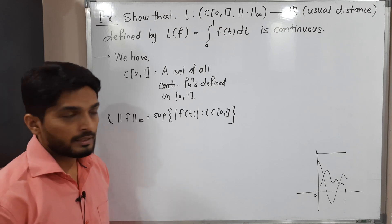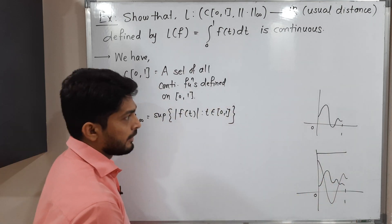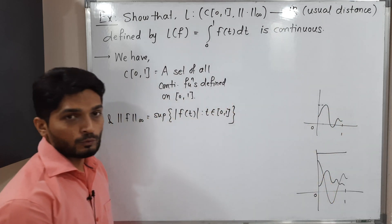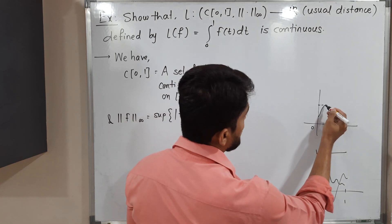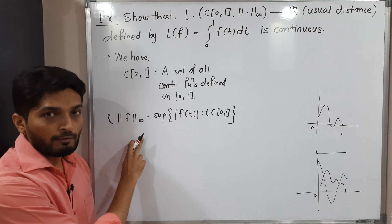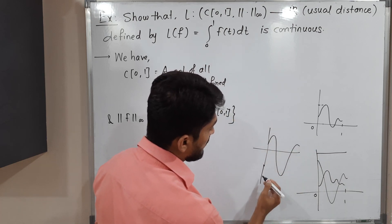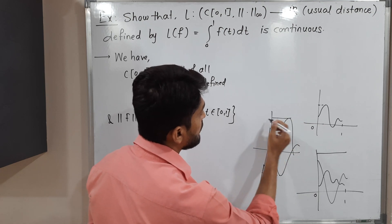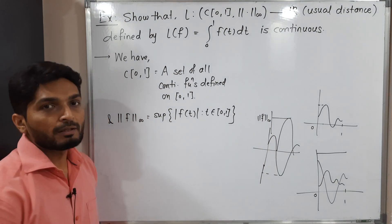Norm infinity is defined as follows: if you have any continuous function defined on [0,1], wherever it achieves its maximum value — we take the mod, that is, we take the maximum of the absolute value — that maximum value is the supremum, and that is the value of norm f infinity. For example, if the function has a minimum value that is negative, taking its mod gives a positive value, and the maximum of that is norm f infinity. That is how norm infinity is defined.